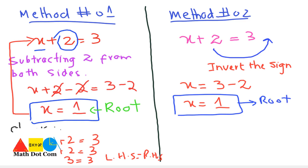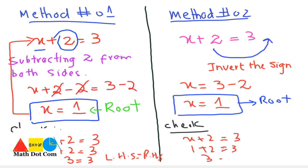Similarly, we can also check this in the same way as in Method 1. Again x plus 2 equals 3; put the value of x: 1 plus 2 equals 3, and 3 equals 3. It means you can use both of these methods to solve a linear equation and find the value of x.